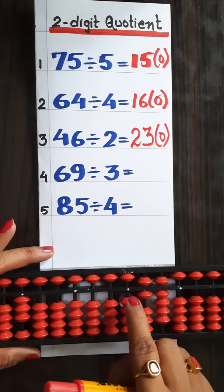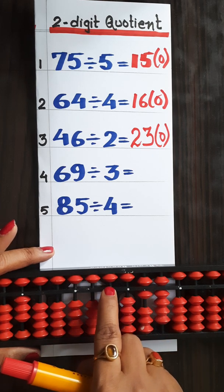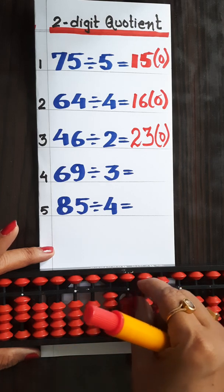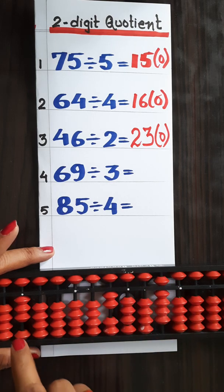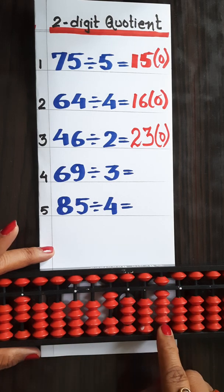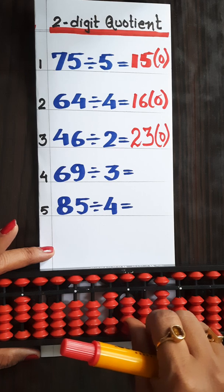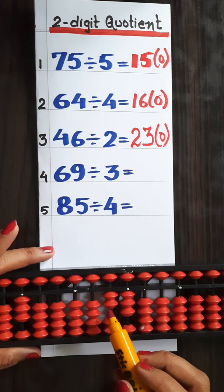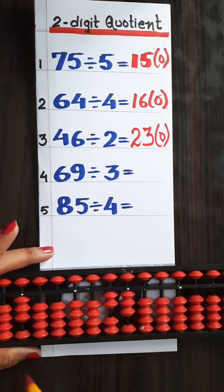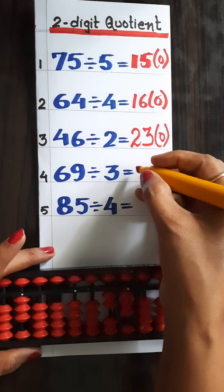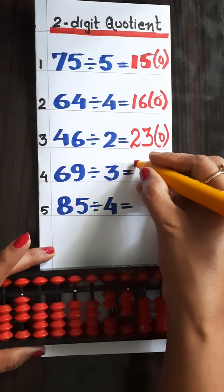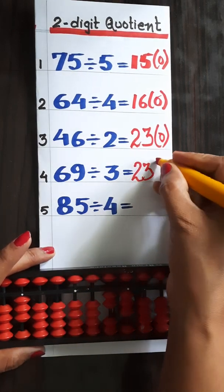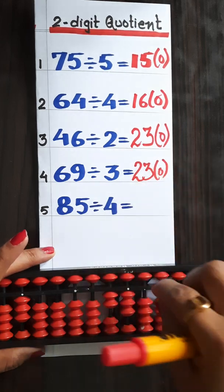We have to place our answer from the tens rod. 3 twos are 6, and in the second step, 3 threes are 9. So the answer is again 23 and remainder is 0.